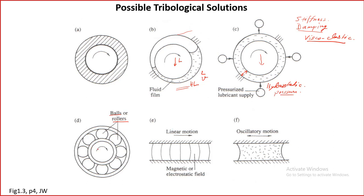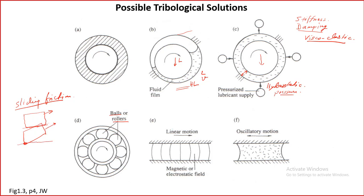Rolling element bearings are basically a method for changing sliding friction to rolling friction. Think of a suitcase — if you pull it along the ground there will be a lot of friction because it is completely sliding friction. Even if you tilt it a little, the friction is still large. But if you put a wheel on it and roll it, the friction is so low that you can move it very easily.